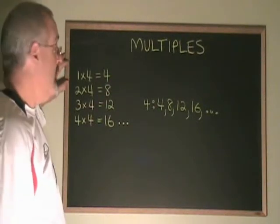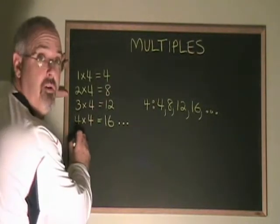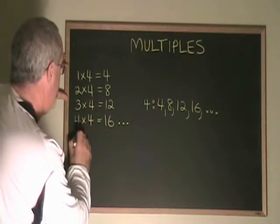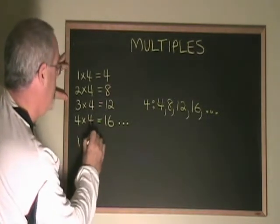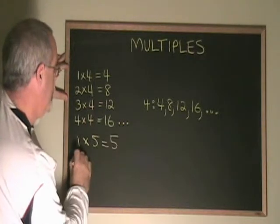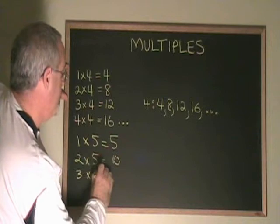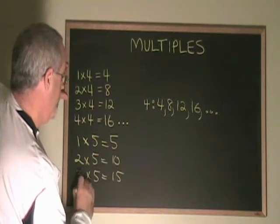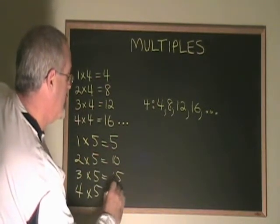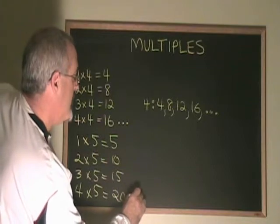Thus, if we start going through the times tables for 5, we get 1 times 5 equals 5, 2 times 5 equals 10, 3 times 5 equals 15, 4 times 5 equals 20, and so on.